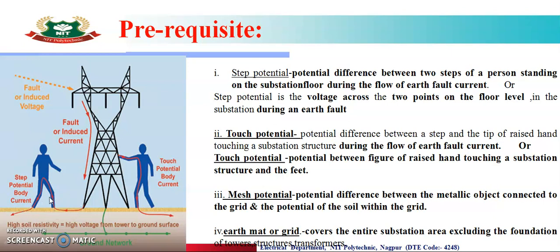ऐसे circular shape में अलग-अलग level पे अलग-अलग voltage level create हो जाती है, और ऐसे energized part पे अगर कोई इनसान गया, तो अगर दो foot के बीच में potential difference होगा, तो उसके वज़े से वह current उस इनसान के body से होके pass हो जाएगा। तो यहाँ पे simply याद रखना है — जो दो foot के बीच का potential difference रहता है energized area में, उस potential difference को बोलते हैं step potential।